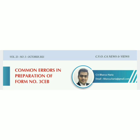Part A of the Annexure to Form No. 3CEB covers general information of the taxpayer along with the aggregate value of international transactions and specified domestic transactions. Part B of the Annexure to Form No. 3CEB requires the taxpayer to provide details of international transactions and specified domestic transactions entered into during the financial year. This covers details in tabular format like name and address of associated enterprise, nature of transaction, most appropriate method adopted, value of transactions, arm's length price, etc.